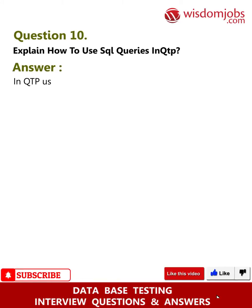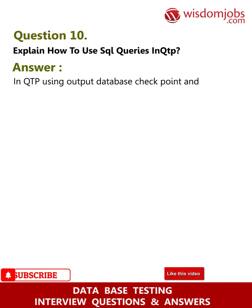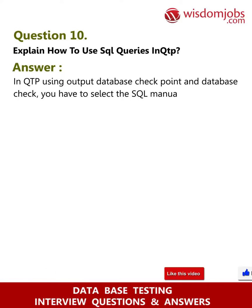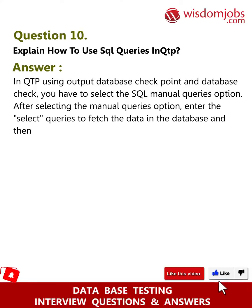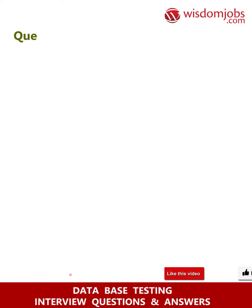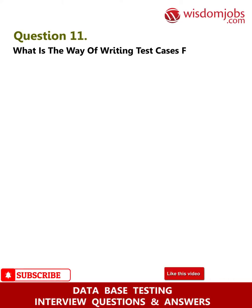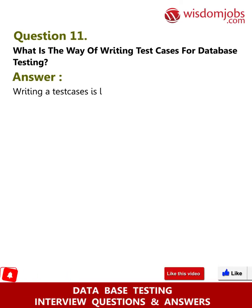Question 10: Explain how to use SQL queries in QTP. Answer: In QTP, using the output database checkpoint and database check, you have to select the SQL manual queries option. After selecting the manual queries option, enter the select queries to fetch data in the database, and then compare the expected and actual results.